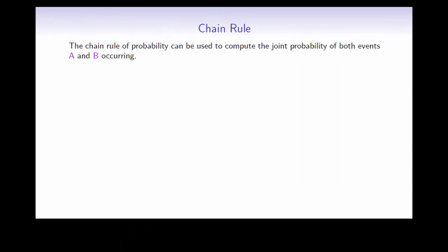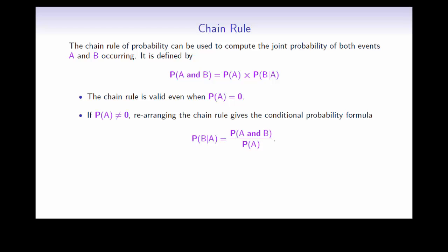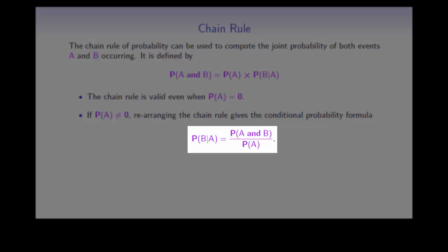Now let's have a look at the chain rule, which can be used to compute the joint probability of both A and B occurring. The probability of A and B is the probability of A multiplied by the probability of B given that A occurs. This is valid even if the probability of A is equal to 0. But notice that in the case where this is not equal to 0, you can rearrange the chain rule to give the conditional probability formula.